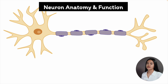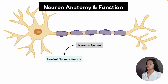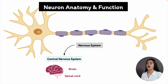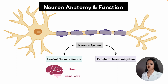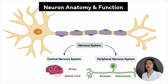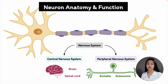We can divide the nervous system into two parts. The central nervous system, which includes the brain and spinal cord, and the peripheral nervous system, which includes the nerves that connect the brain and spinal cord to the body's muscles, glands, sensory organs, and other tissues.